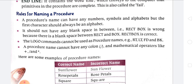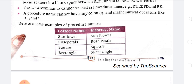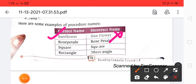Rules for naming a procedure: a procedure's name can have any number of symbols and alphabets, but the first character should always be an alphabet. It should not have any blank space — for example, 'rect box' is wrong because there is a space; 'rectbox' is correct. Logo commands such as rt, lt, fd, bk cannot be used as procedure names. A procedure name cannot have any colon or mathematical operators like plus or star. Example: 'sunflower' is correct; 'rose petals' is wrong due to the space.